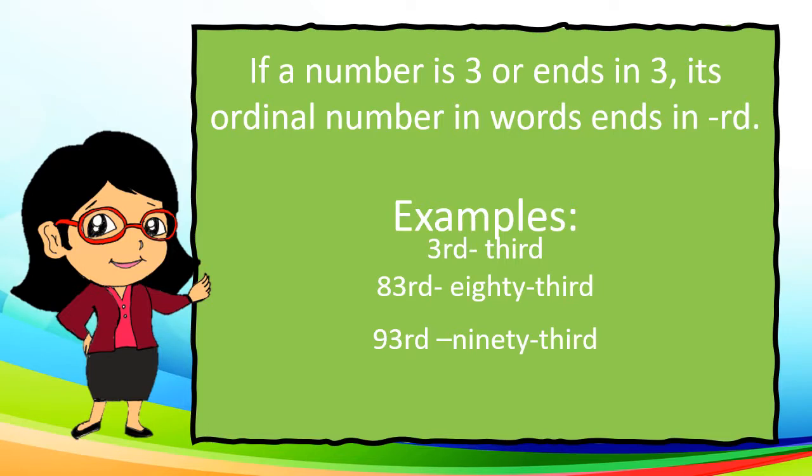If a number is 3 or ends in 3, its ordinal number in words ends in RD. For example, third — we add RD to number 3 because the last two letters of the word 'third' end in RD. We also have 83rd and 93rd.